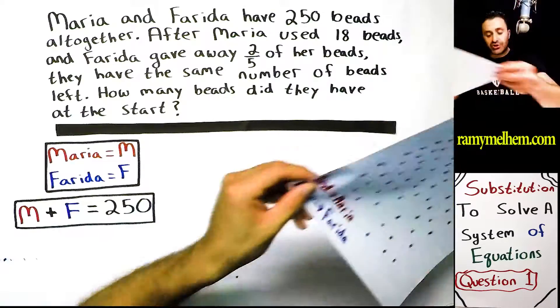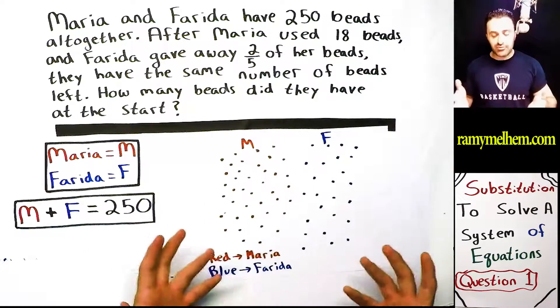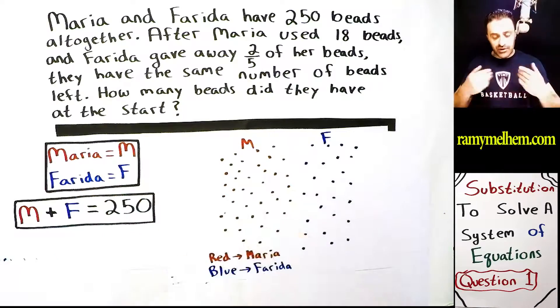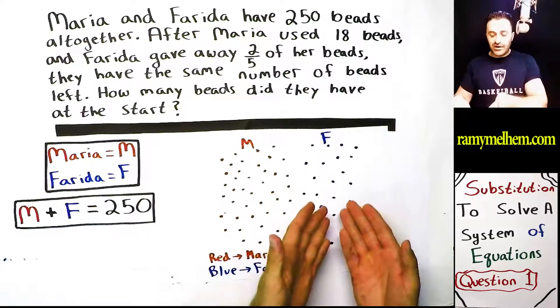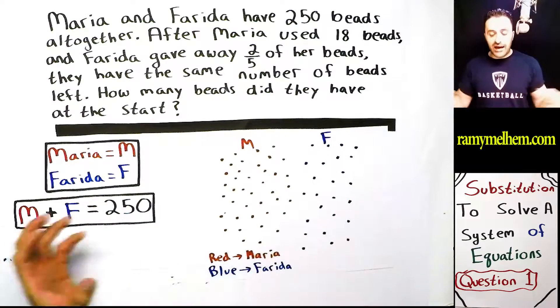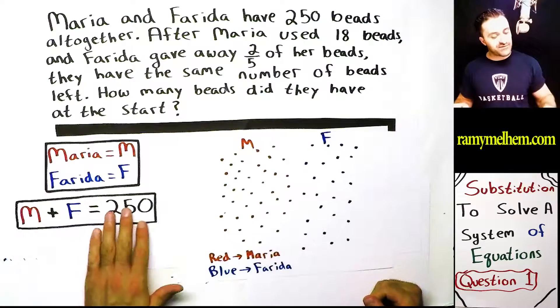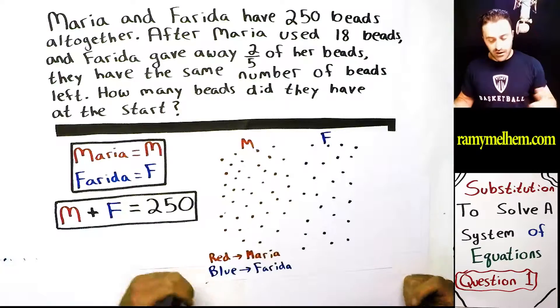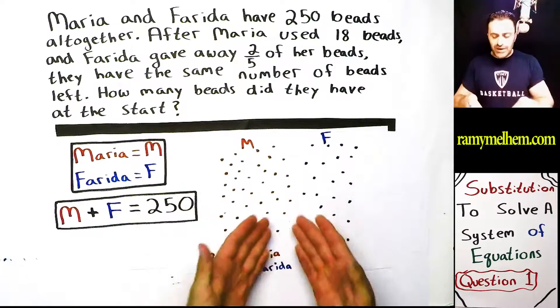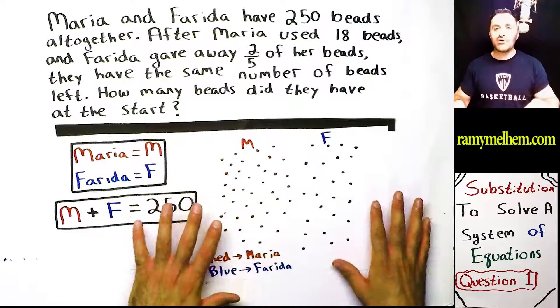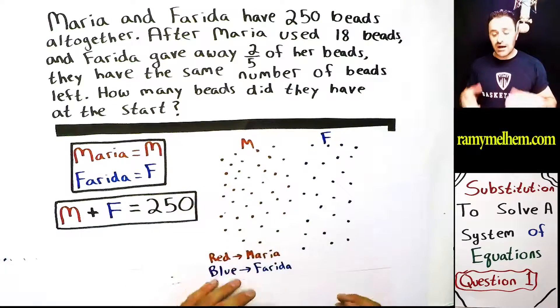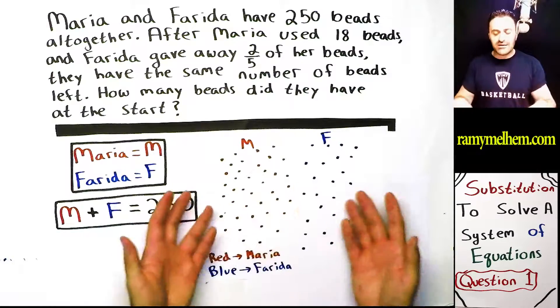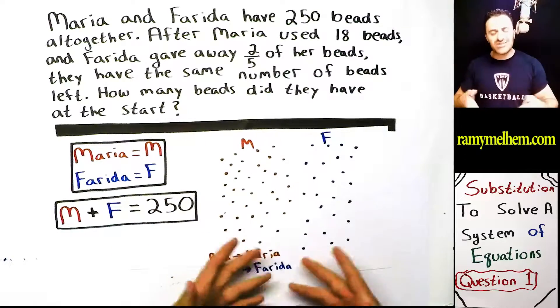What does that look like with a picture? I love going back to visuals guys, so bear with me on this. Here's what it looks like. Take Maria's beads, they're the red. Take Farida's beads, they're the blue. Add them together and you get 250. Maria plus Farida equals 250 beads. All right, so we don't have 250 beads here, so you're going to have to play along with me. I didn't have time to make 250 beads. Plus, I don't know who's got more. I don't know if Maria has more or Farida has more. So I just kind of did this just to show you a visual. So just play along with that.